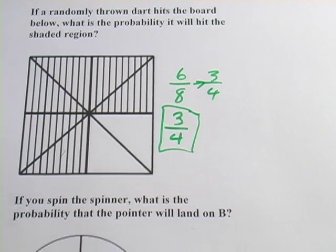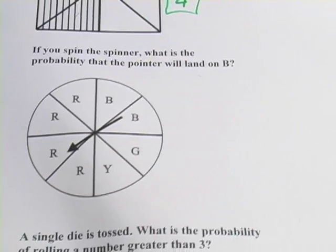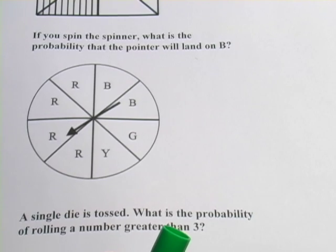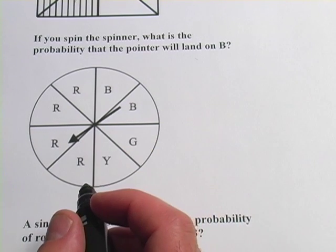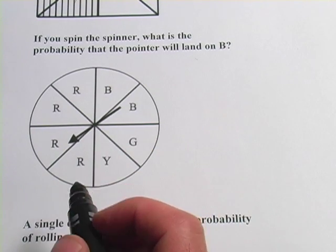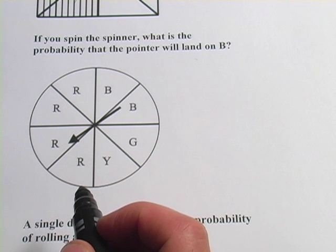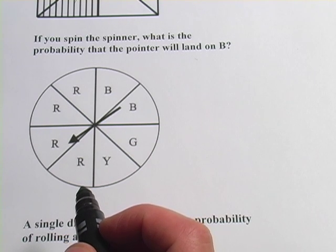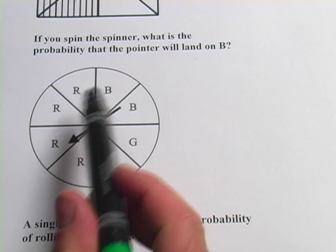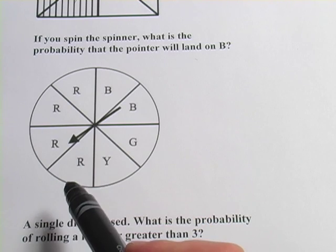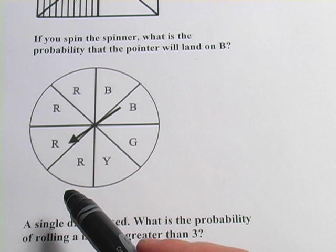Let's try one more here. This one says, if you spin the spinner, what is the probability that the pointer will land on B?